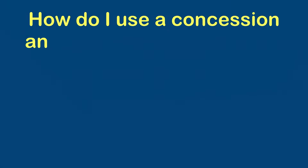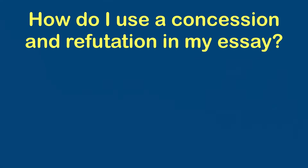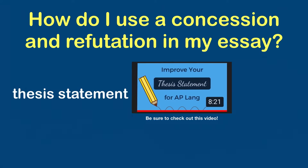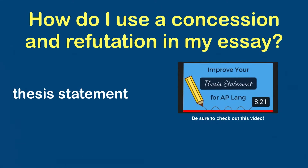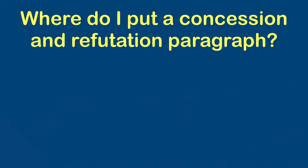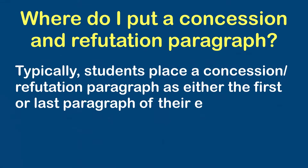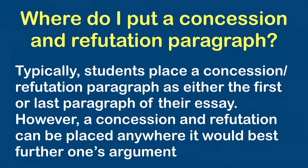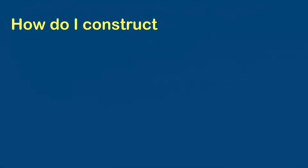So the question becomes: where do I put a concession and refutation in my essay? Some students like to do this as part of their thesis statement — I've done a couple of videos on this so I'll link one here — but I want to talk about how you actually develop an entire paragraph, or maybe even two paragraphs, to set up a concession and refutation. A lot of students use the concession and refutation paragraph as either their first or their last body paragraph. However, that's not to say it can't go other places — it could be a middle body paragraph or it can serve as a very well-developed introductory paragraph.